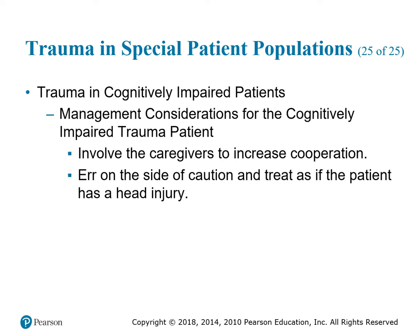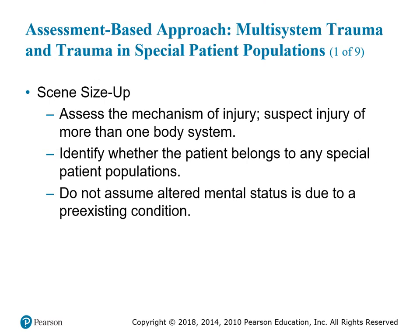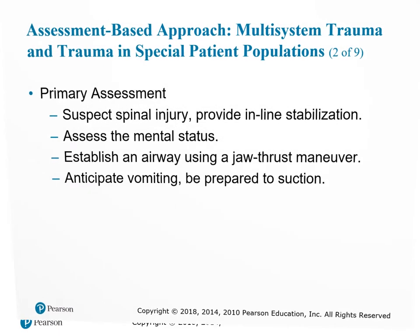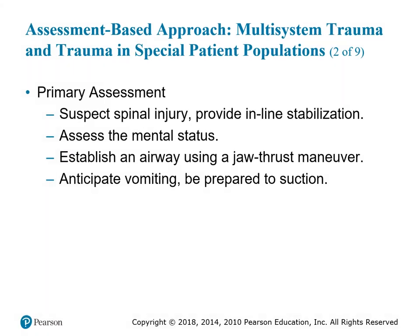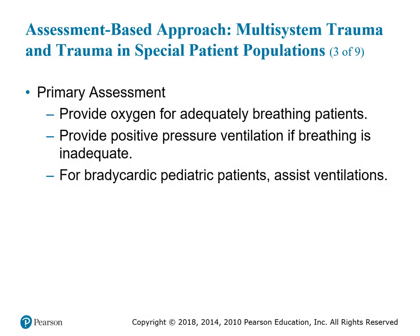Management: involve caregivers to increase cooperation, err on the side of caution, and treat if the patient has a head injury. Assess mechanisms of injury and suspect injury of more than one body system. Identify whether the patient belongs to any special population. Do not assume altered mental status is due to a pre-existing condition. Provide inline stabilization and respect spinal injury. Assess mental status, establish an airway using a jaw thrust maneuver, anticipate vomiting, and be prepared to suction. Provide positive pressure ventilation if breathing is inadequate; for bradycardic pediatric patients, assist ventilations.